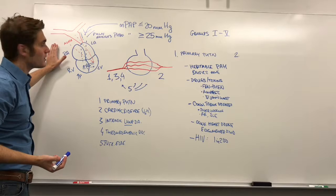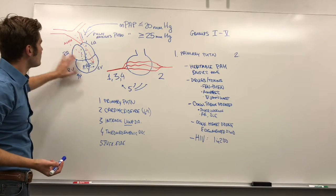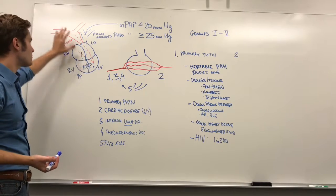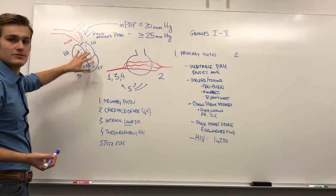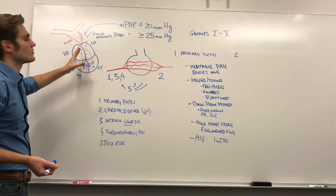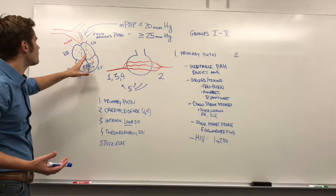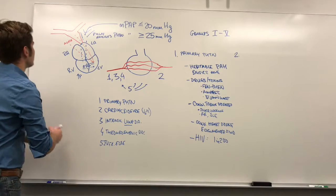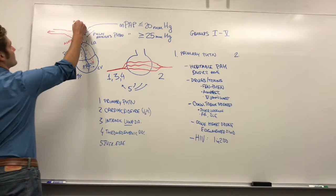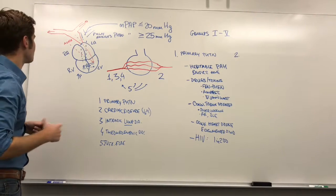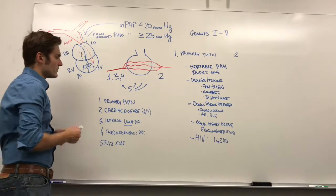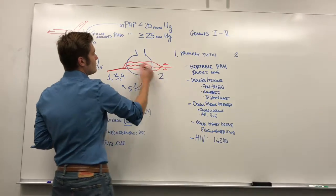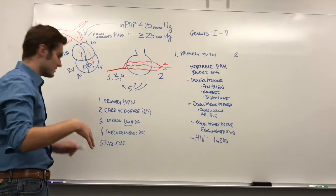Where can a problem happen here? Let's say you have a disease that's affecting the left side of the heart. You can't return the blood from the lungs to the left side of the heart if there's some sort of pathology going on there. So blood kind of gets backed up, and the increased flow of blood gets transmitted up these pulmonary veins and causes back pressure from the other side.